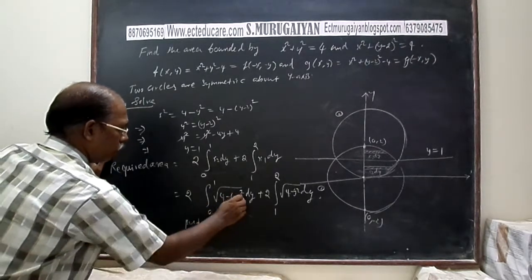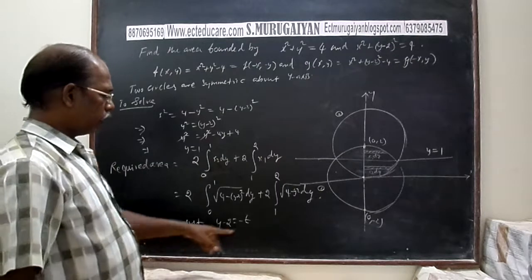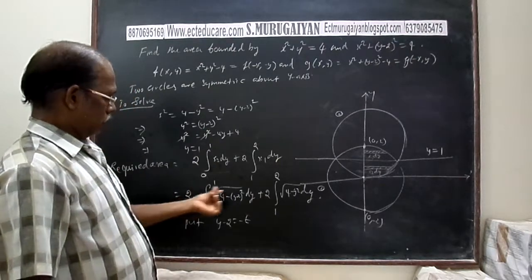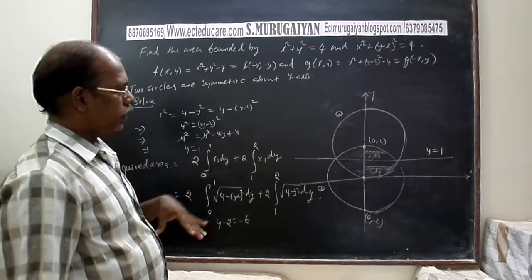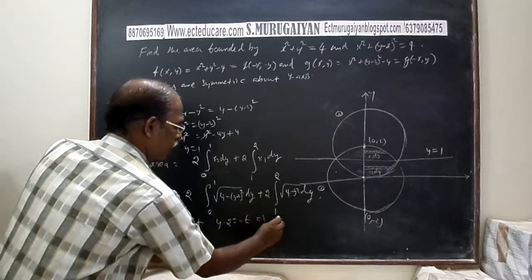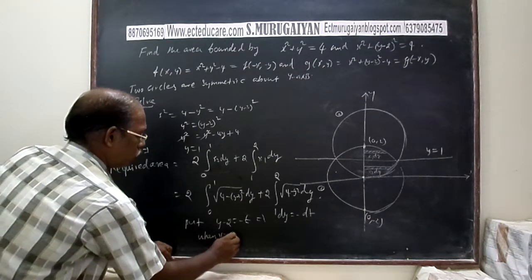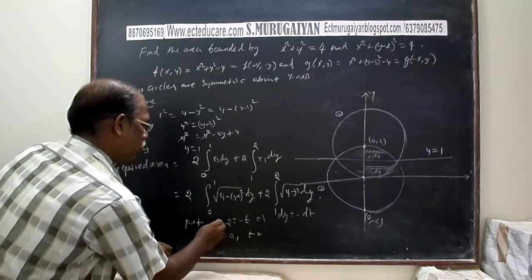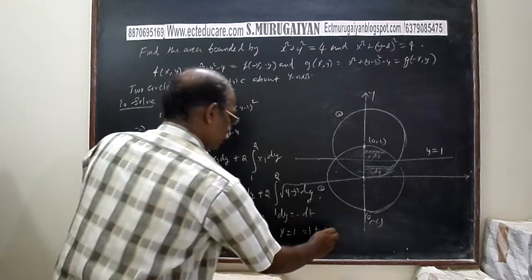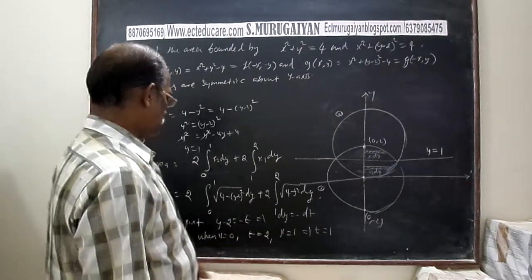Let us take the substitution y - 2 = -t (not +t, because if we take +t the limits become negative, making the properties of definite integrals harder to apply). So dy = -dt. When y = 0, t = 2; when y = 1, t = 1.